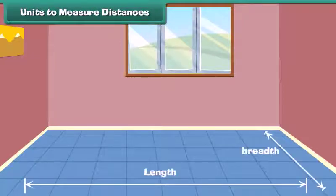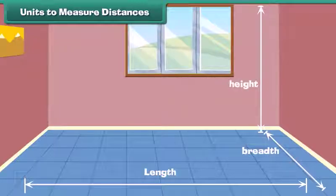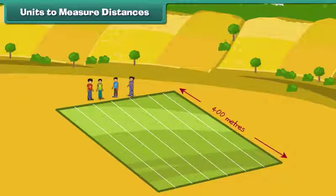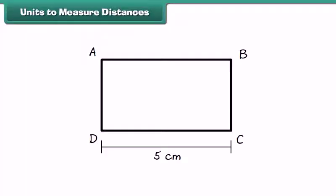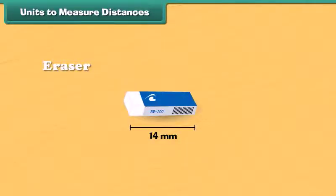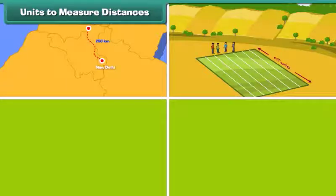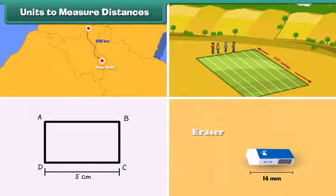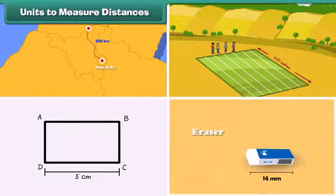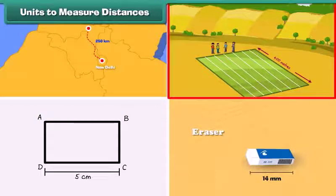Length, breadth, and height are words used to express distance. The distance between New Delhi and Chandigarh is 250 kilometers. Many students participated in a 400 meters race. The length of rectangle ABCD is 5 centimeters. The length of an eraser is 14 millimeters. Kilometer, meter, centimeter, and millimeter are the units used for measuring distances. Among these, kilometer is the biggest unit for long distances, while millimeter is the smallest. The standard unit of distance is meters.